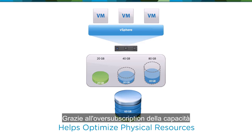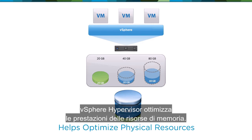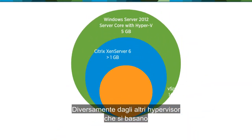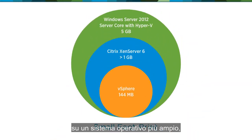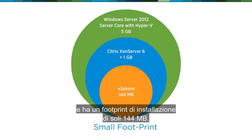By allowing over-subscription of capacity to the virtual machines, page sharing, and compression, vSphere Hypervisor optimizes performance of memory resources. Unlike other hypervisors that rely on a broader operating system, vSphere Hypervisor is OS-independent and has an install footprint of only 144 megabytes.